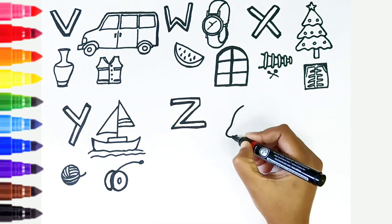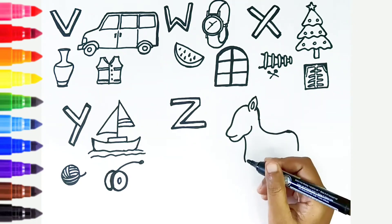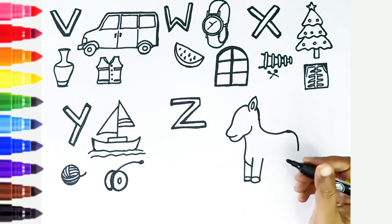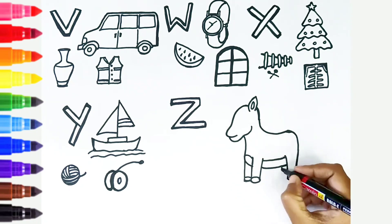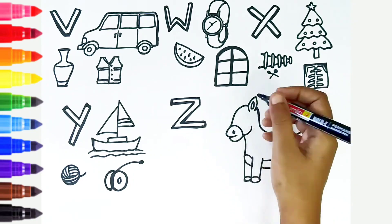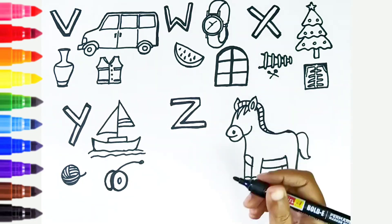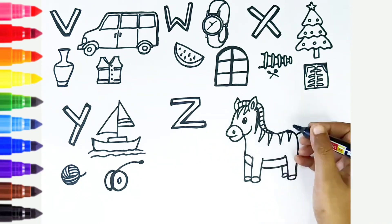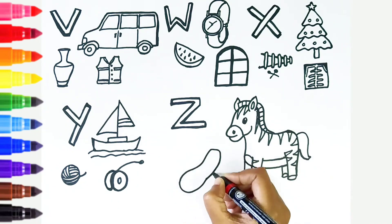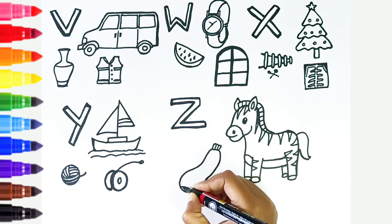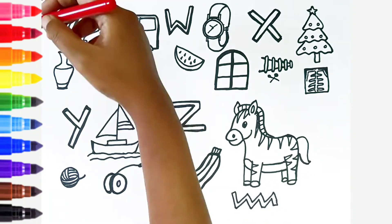Z. Z is for zebra. Z is for zucchini. Z is for zigzag.